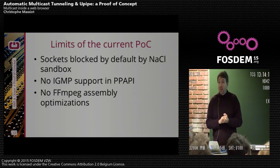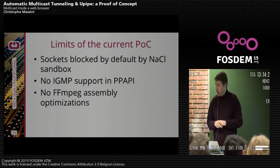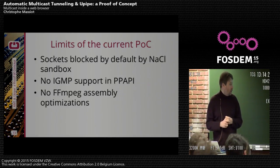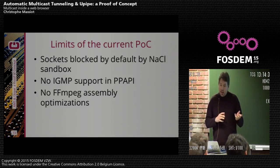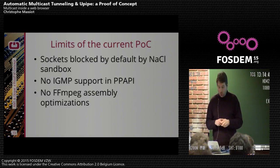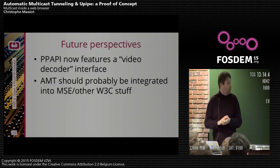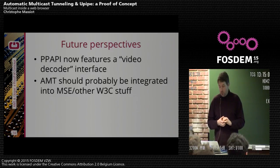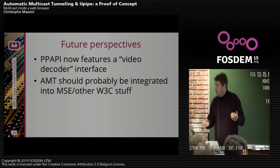Another caveat is that there is no assembly optimization — no MMX, no SSE, and so on in FFmpeg — making decoding very slow. It works with SD video, but with HD you'd need a very powerful machine. Native Client does support some MMX and SSE, but not in the way FFmpeg uses it. There is probably some code rewriting needed, but a better option is that PPAPI now features a video decoder interface — I haven't been able to get it working yet, but that's the way to go. In the longer term, AMT should probably be integrated natively into the browser, like MSE or some other W3C specification.